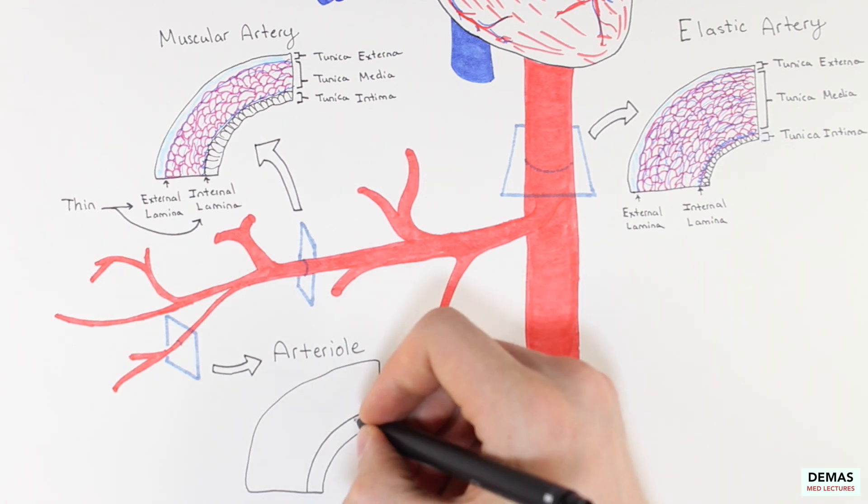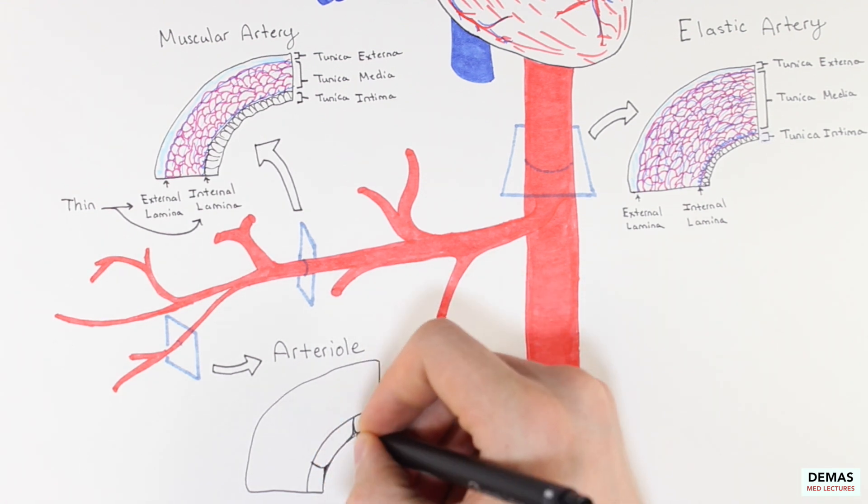Even though the arteriole is so much more narrow than the other arteries we've mentioned previously, it still has the three layers, the tunica intima, tunica media, and tunica externa.